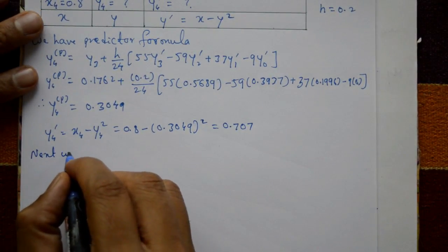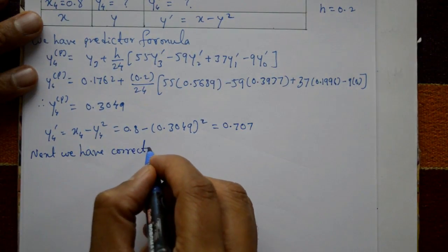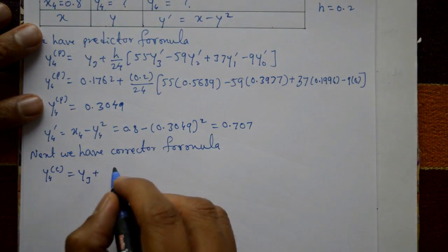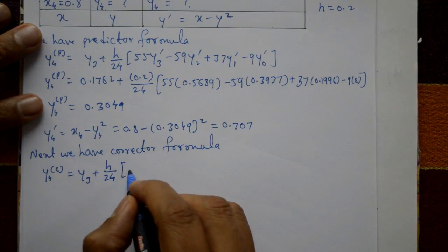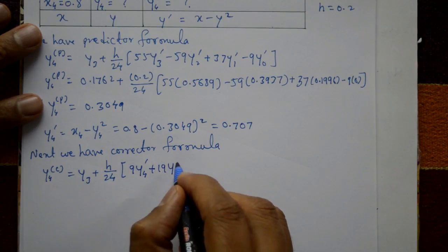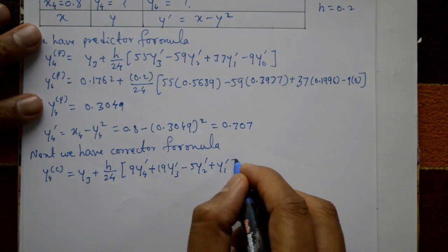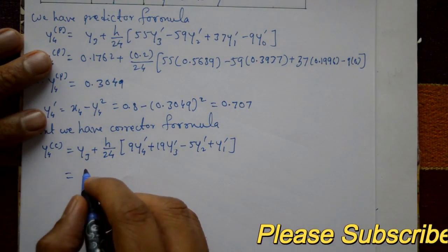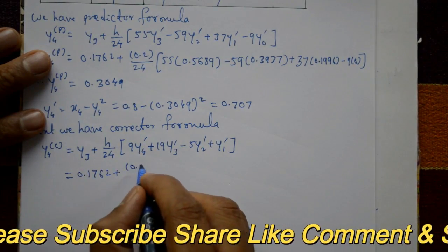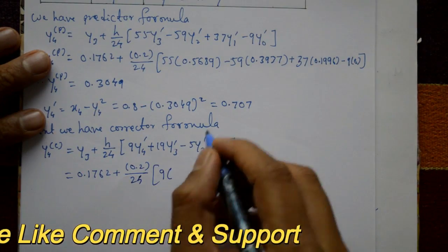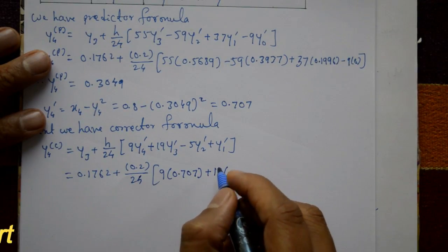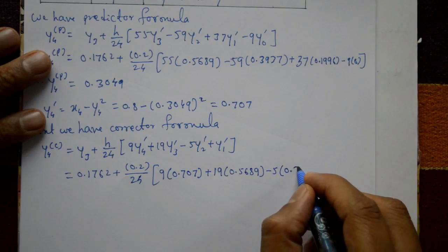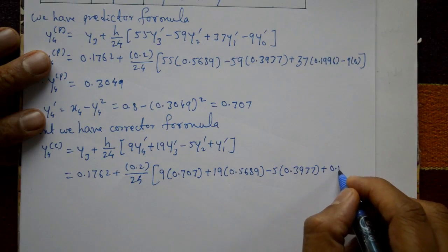Next, we apply the corrector formula: y₄ᶜ = y₃ + (h/24) × (9y'₄ + 19y'₃ − 5y'₂ + y'₁). Substituting: y₄ᶜ = 0.1762 + (0.2/24) × (9×0.707 + 19×0.5689 − 5×0.3937 + 0.1996).